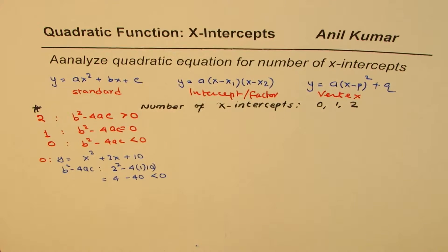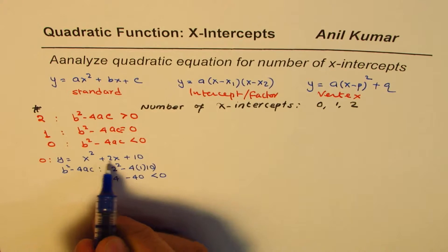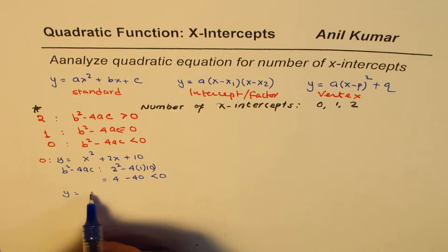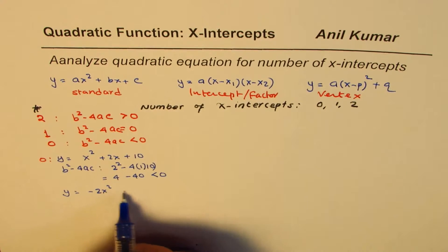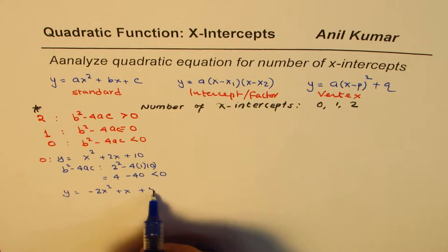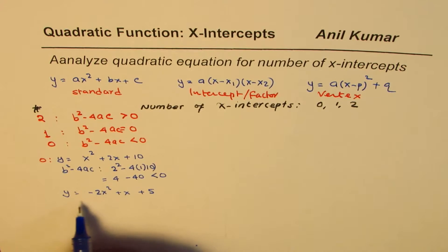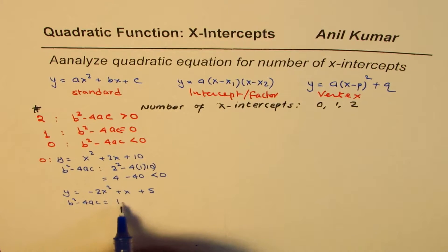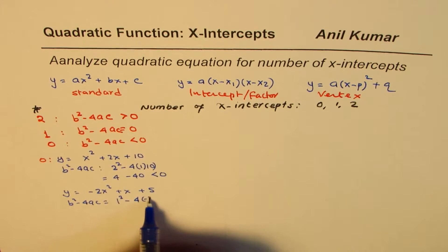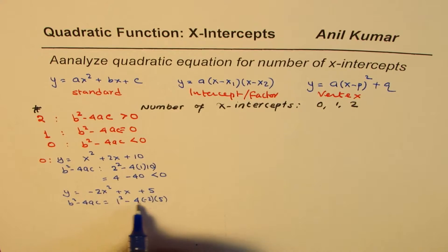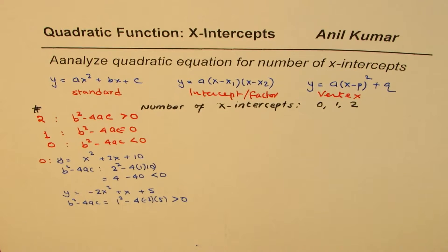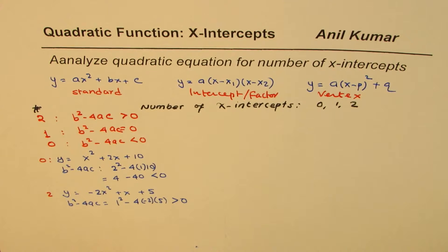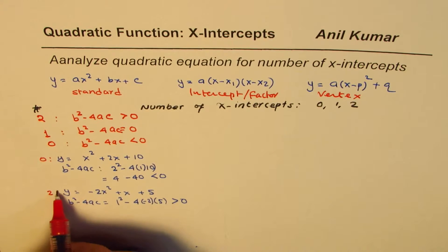If I change a sign and take y = -2x² + x + 5, then B² - 4AC = 1² - 4(-2)(5) = 1 + 40, which is positive — greater than 0 — so in this case we will have 2 x-intercepts.